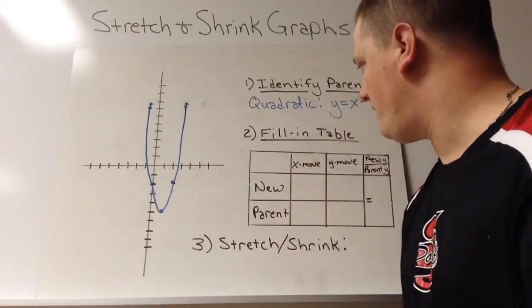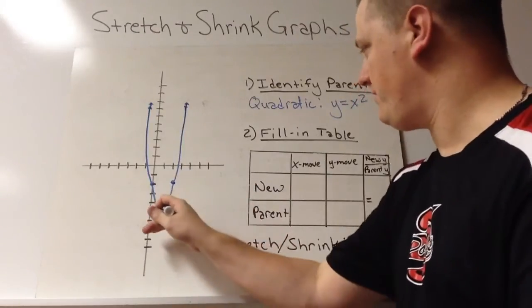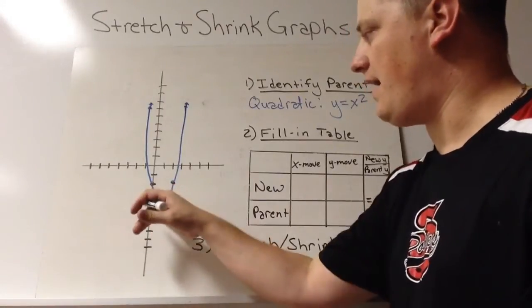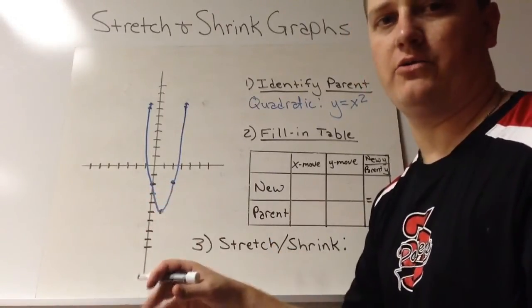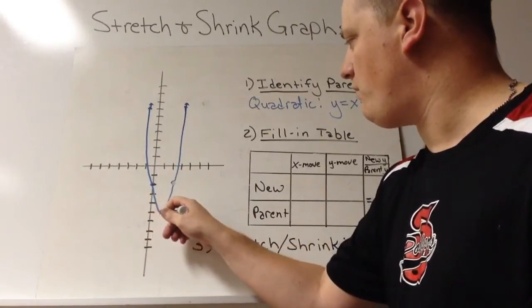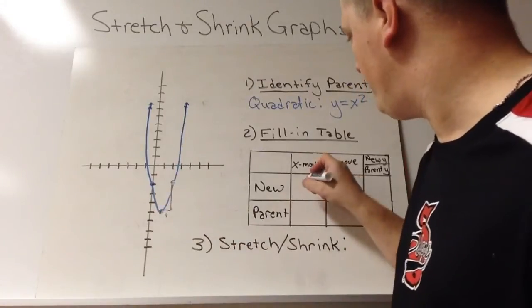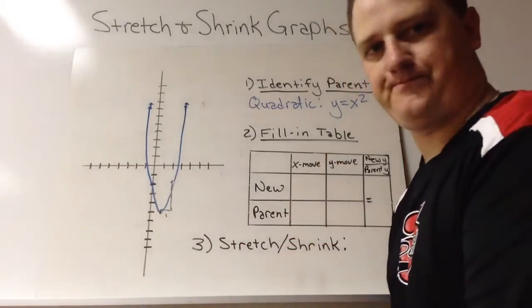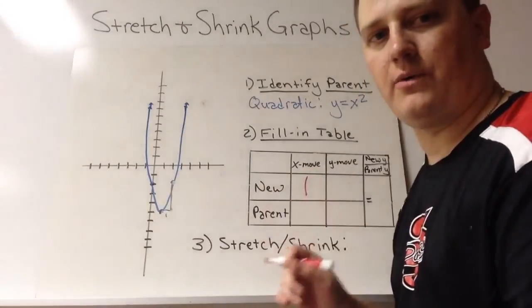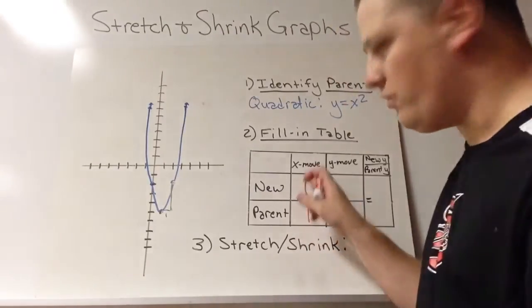We need to go to our graph. We always start at the vertex. We need to figure out how far right do I have to go to get to the next point. So here's my first point. I need to go right 1 to get to it. So my x move is going to be 1. I had to go right 1. Our parent is always going to have to have the same x move. So that one's going to be 1. These two have to be the same.